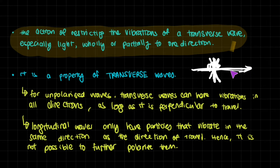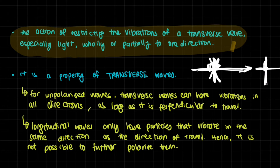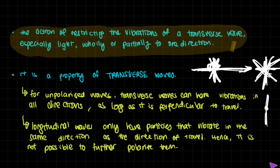If you take this and flip it so that it's heading directly towards us, this line would become a dot. The particles can vibrate up and down, or side to side, or in any direction. That's why you can put it through a polarizing filter and then only get one direction.